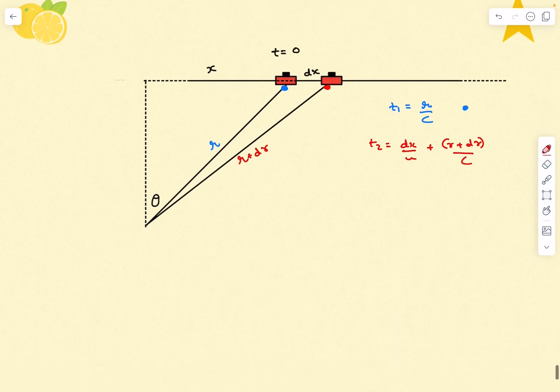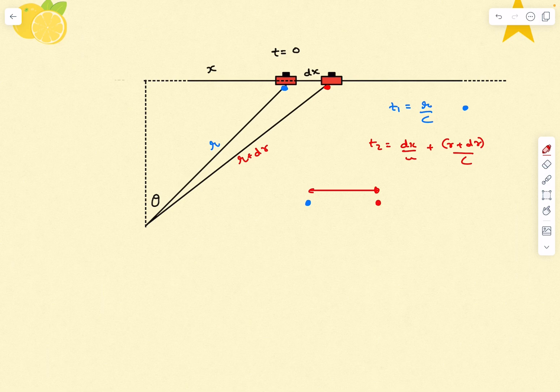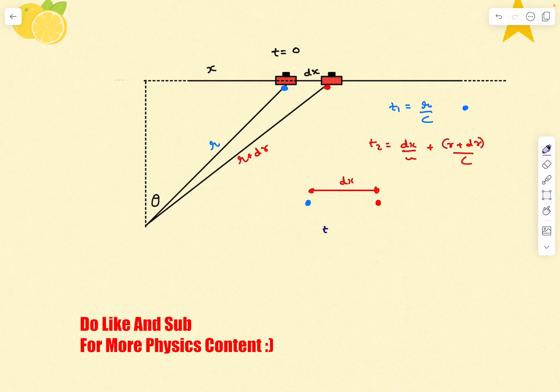If you ask the observer what he saw—a blue light pulse and after that he saw a red light pulse at a separation of dx. The time elapsed between these two events is going to be t₂ - t₁. Why is this t₂ - t₁?